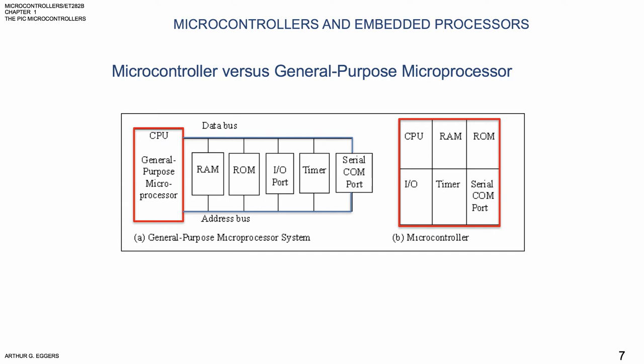This is not the case with microcontrollers, because everything is on board. A microcontroller, even a simple one, has a CPU — a microprocessor — in addition to a fixed amount of RAM, ROM, I/O, and a timer all on a single chip. In other words, the processor, RAM, ROM, I/O, and timer are all embedded together in one single chip on the microcontroller.